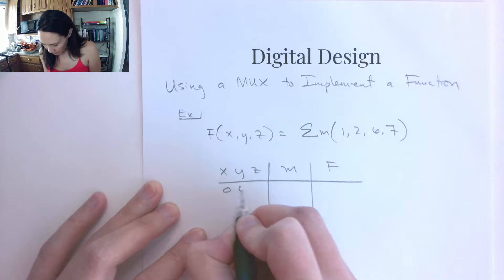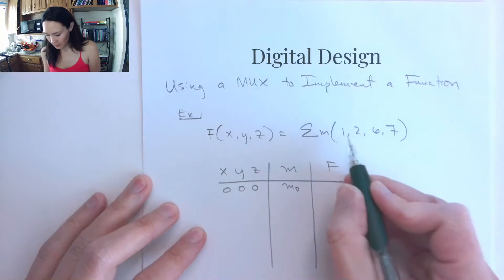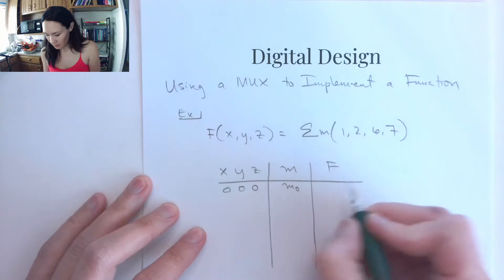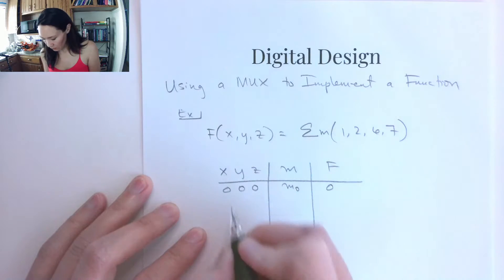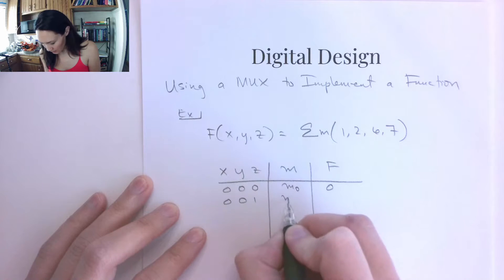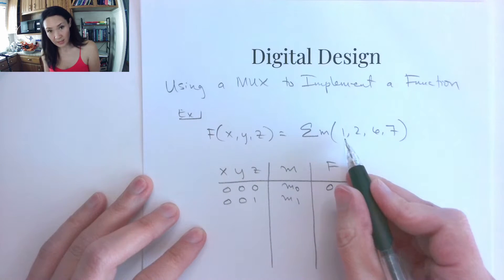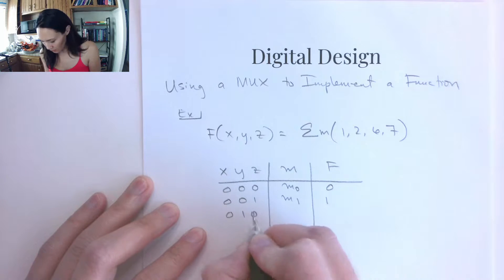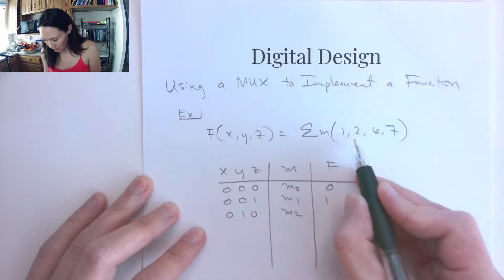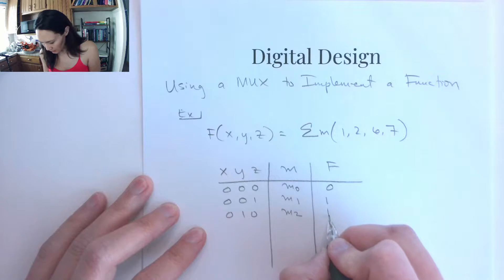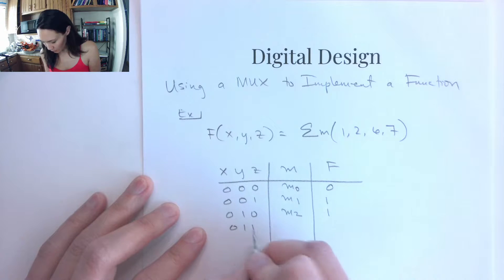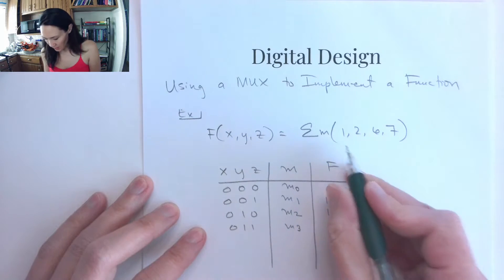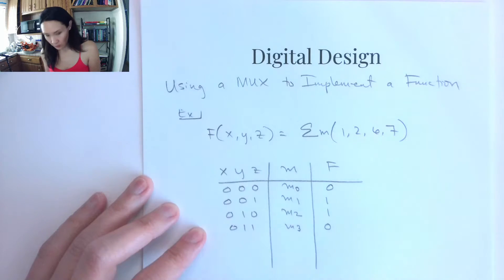Then the first case, 0, 0, 0, this is minterm 0. It's not in our list of minterms, so f will be 0 there. At 0, 0, 1, this is minterm 1. Minterm 1 is in our list of minterms, so that's where we have the 1. 0, 1, 0 is minterm 2. Minterm 2 is also in our list, so we have a 1 there. 0, 1, 1, minterm 3 is not in our list, so that means we have a 0 there.